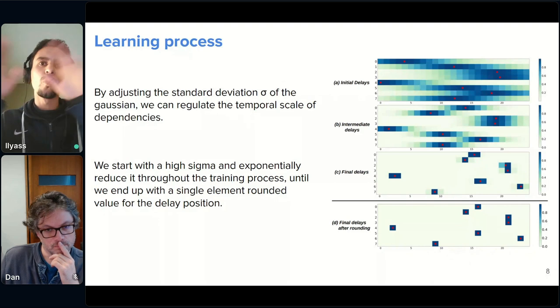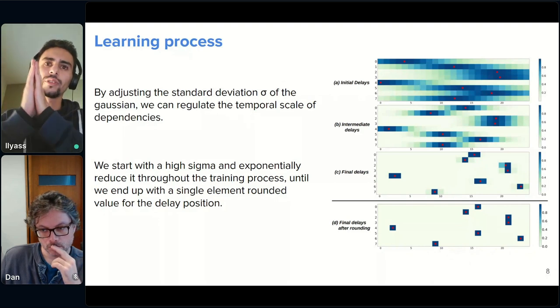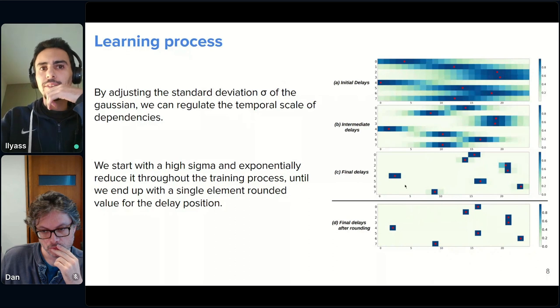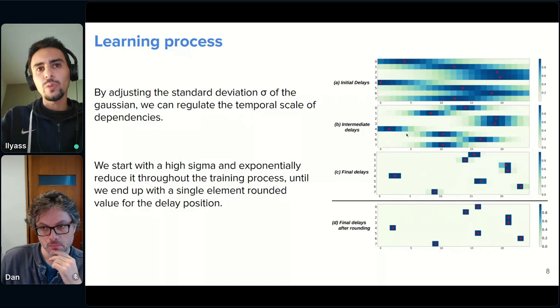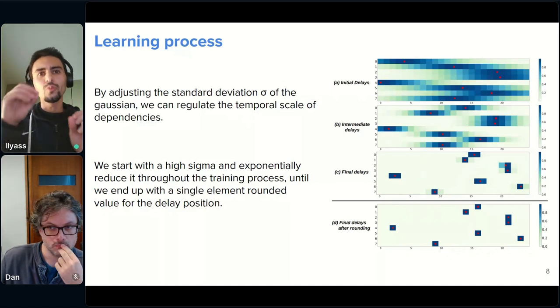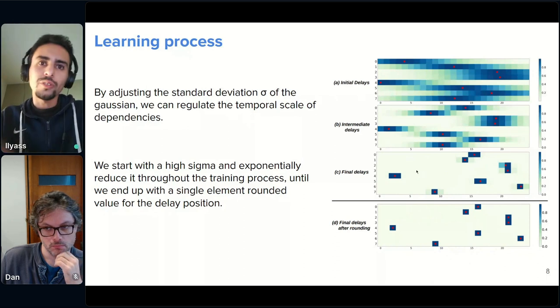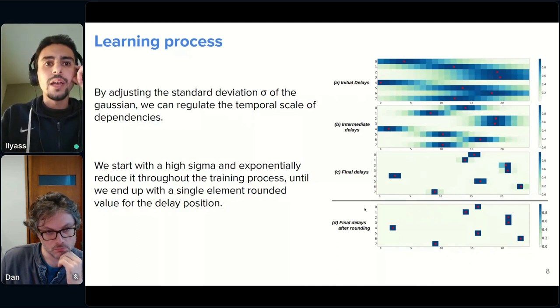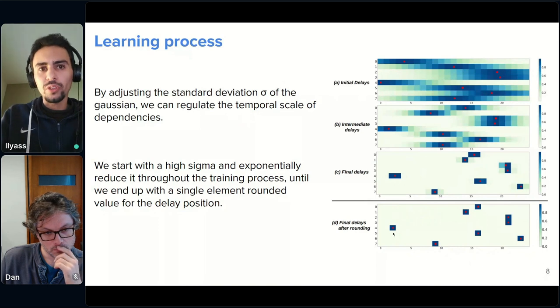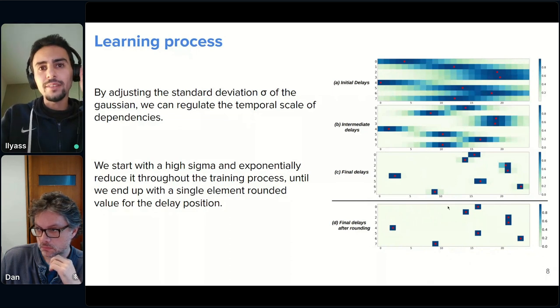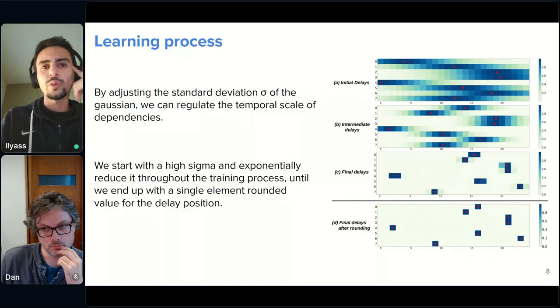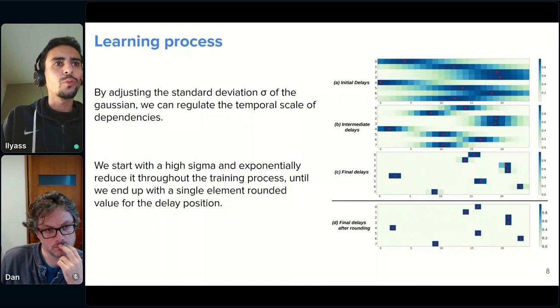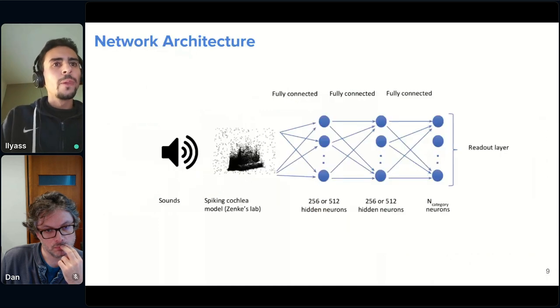And as the training progresses, we slowly decrease this standard deviation until we arrive at something like this, where we have a very thin Gaussian. And this, at the end, when we have a very thin Gaussian, it will allow us to finely tune the weights, and the positions will normally be already learned. Afterwards, all we have to do is round these positions to have a single position and a single weight. And this, when we have this, we can simply convert it to a normal, to a standard feedforward SNN that can be easily implemented in neuromorphic chips.